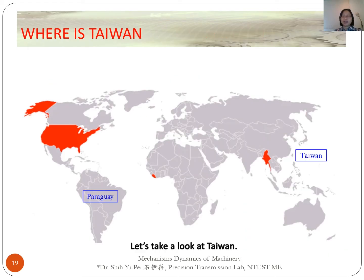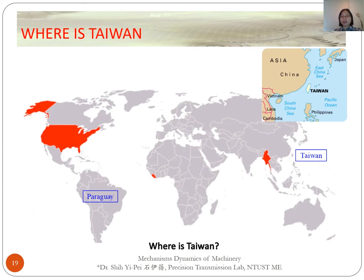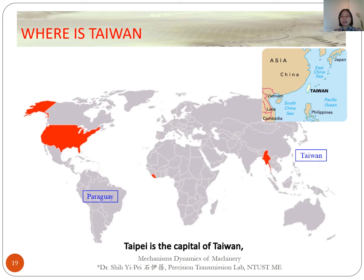Let's take a look at Taiwan. The island of Taiwan is also known as Formosa, which means 'a beautiful island.' Taiwan is situated in the West Pacific. Its neighboring countries include China to the northwest, Japan to the northeast, and the Philippines to the south. Taipei is the capital of Taiwan, located in the northern part of the island.